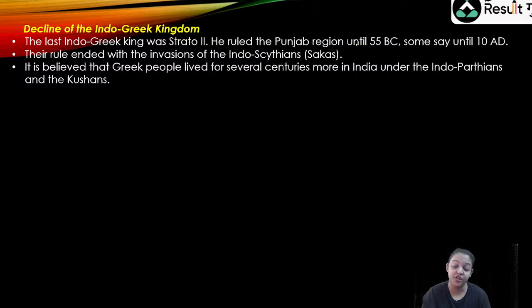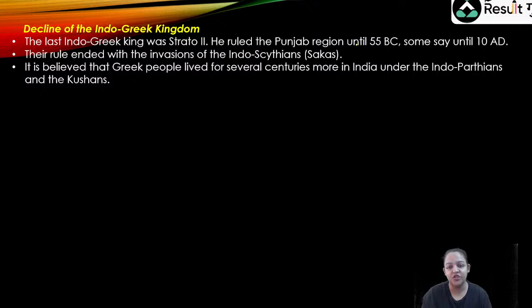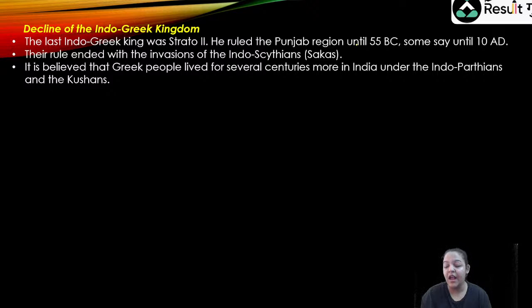The last Indo-Greek ruler was Strato II, who ruled over Punjab till 55 BC — some say until 10 AD. Their rule ended with the invasions of the Indo-Scythians, the Shakas. It is believed that Greek people continued living for several centuries more in India under the Indo-Parthians and the Kushanas, even though their political power had declined.